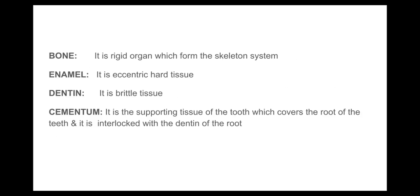Bone is a rigid organ which forms the skeletal system of the body. Enamel is the eccentric hard tissue. Dentine is a brittle tissue.